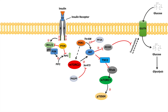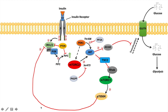mTOR complex 1 can have its downstream effects via P70S6K and a variety of other targets. When P70S6K is activated by mTOR complex 1, it will have a negative feedback regulation of the insulin signaling pathway, producing inhibitory phosphorylation of IRS one and two, which essentially turns this pathway off. That is why mTOR complex 1 is the negative feedback regulator of the pathway.